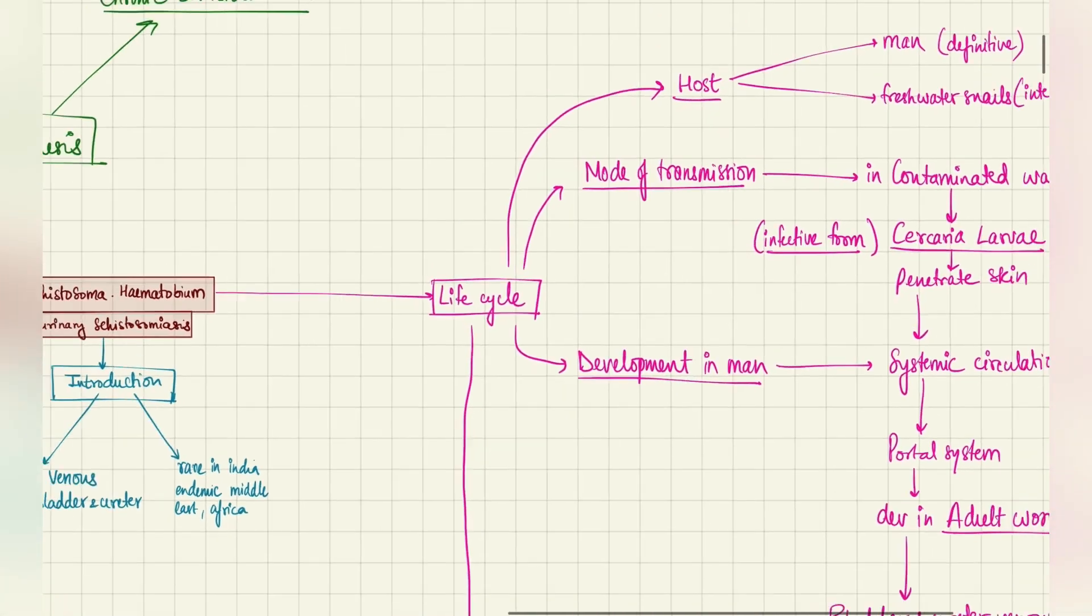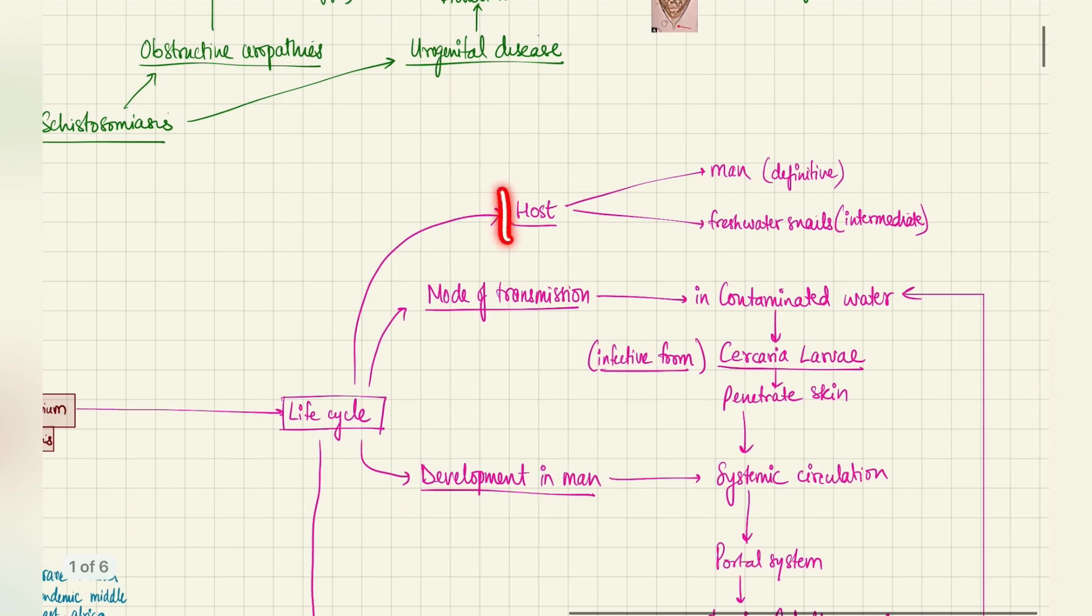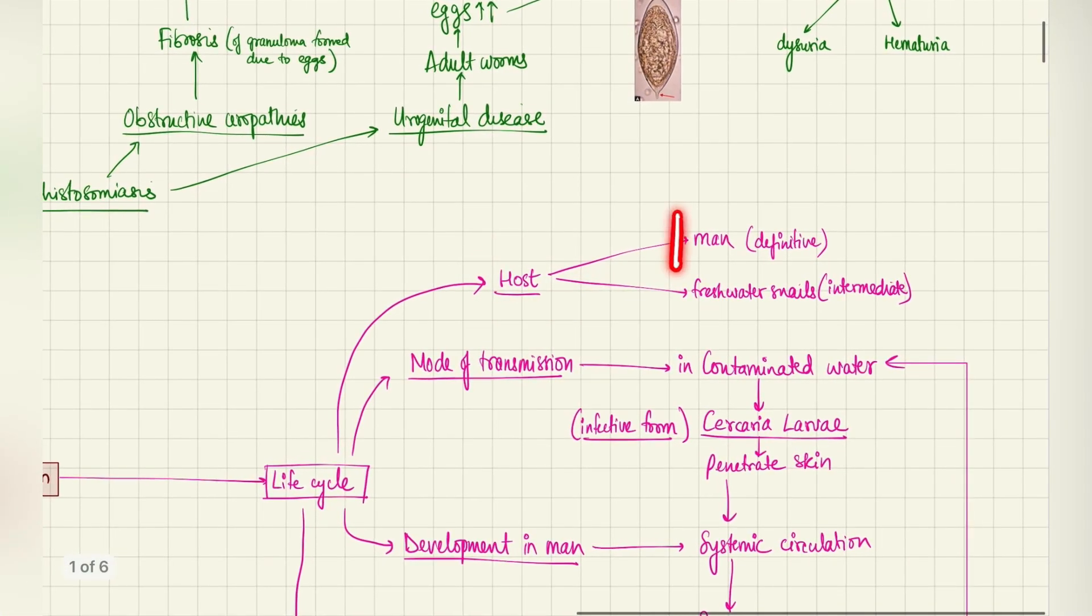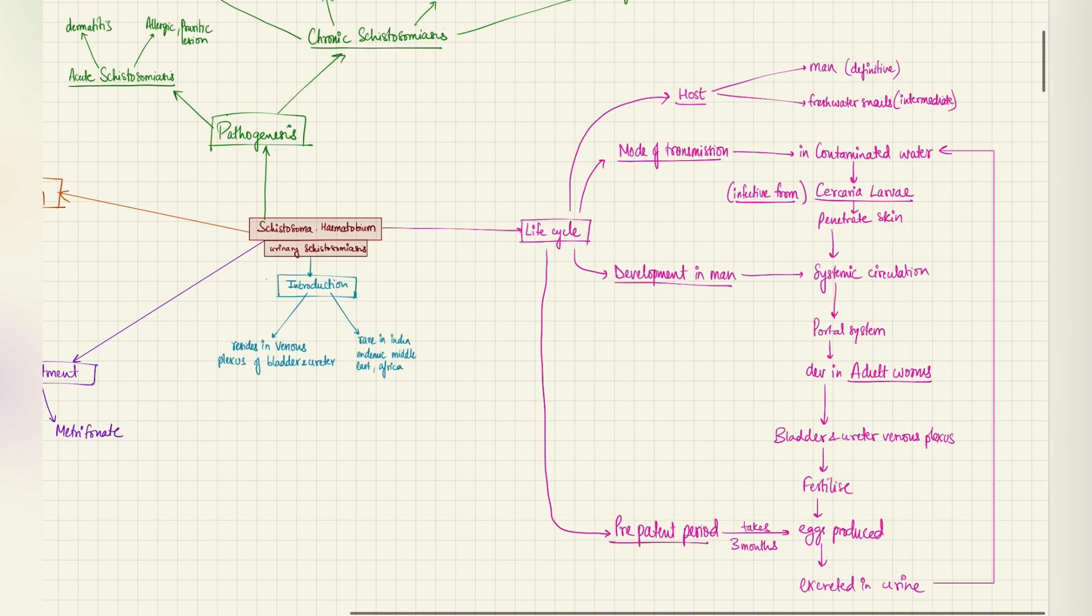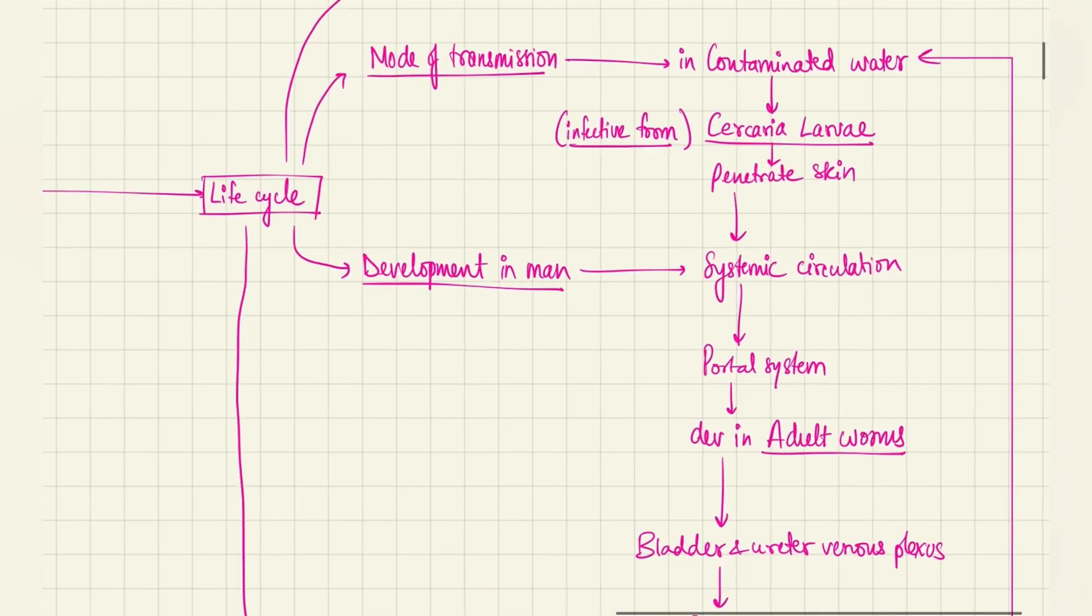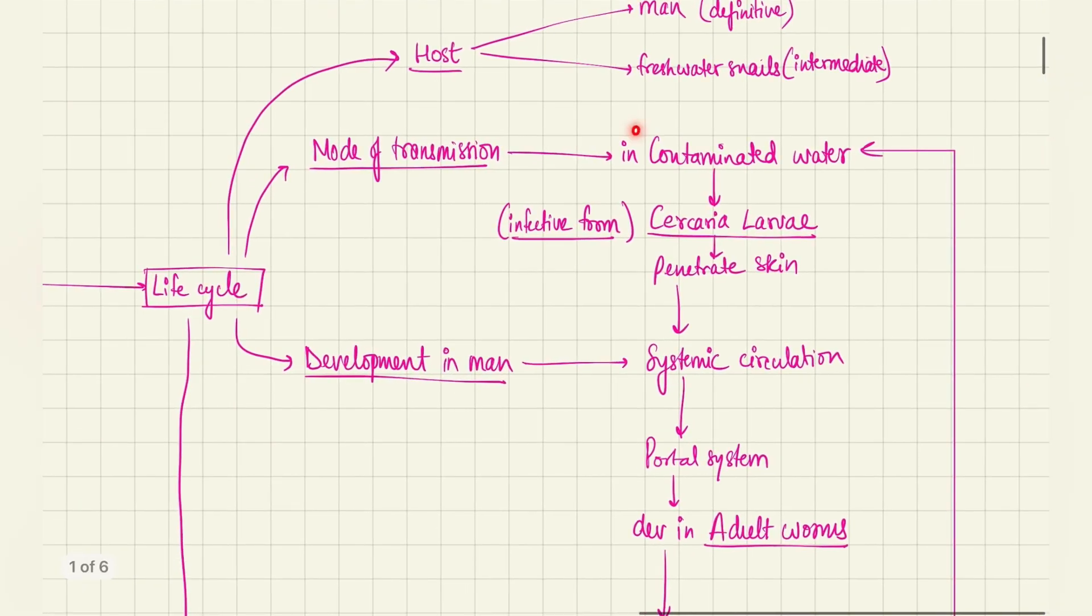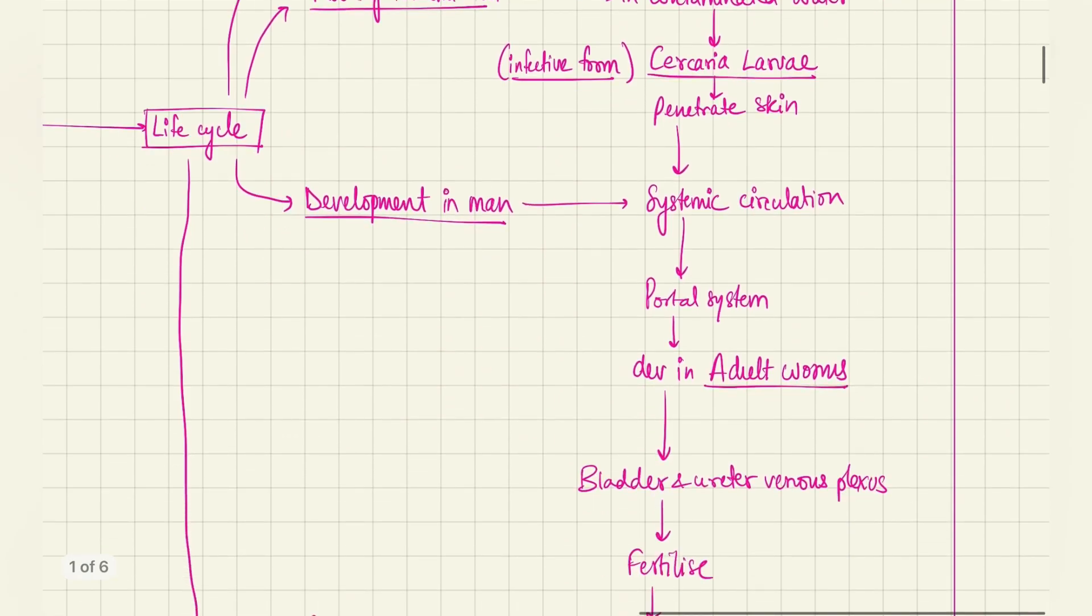Now, coming to the life cycle. The definitive host for this parasite is man, that's the main host. However, the intermediate host is the freshwater snails. This will become evident in the life cycle. First of all, the mode of transmission is contaminated water. Through contaminated water, the cercaria larva, which is the infective form, will penetrate your skin and then go into the systemic circulation. This is where the development in man starts.